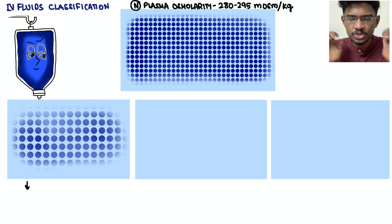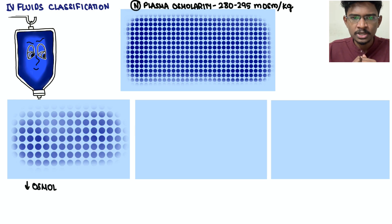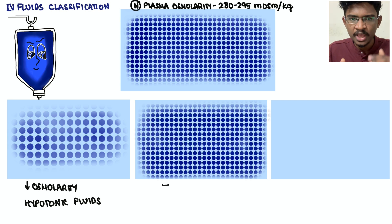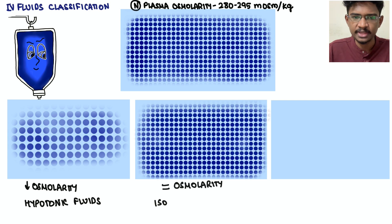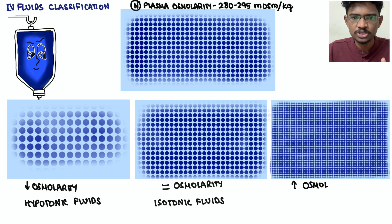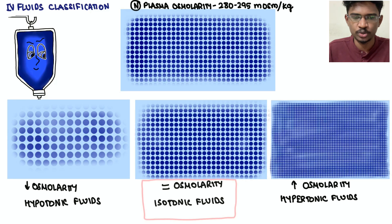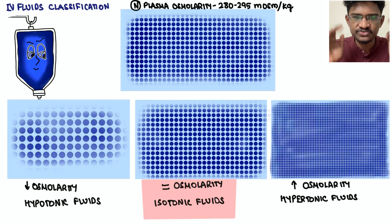IV fluids are classified based on tonicity. If a fluid's osmolarity is less than plasma osmolarity, it's hypotonic. If similar to plasma osmolarity, it's isotonic. If greater than plasma osmolarity, it's hypertonic. We will look at isotonic fluids first.